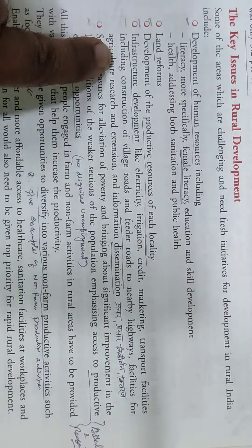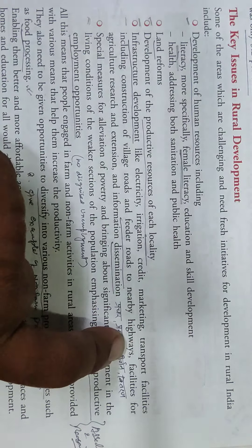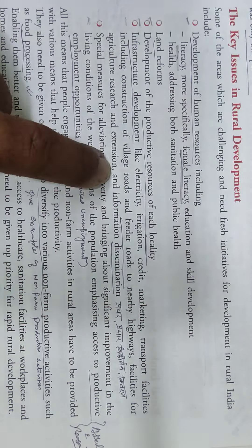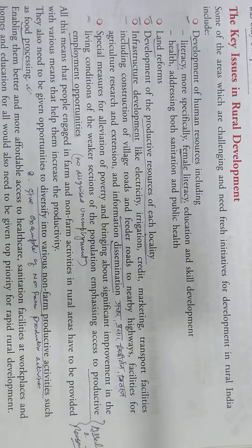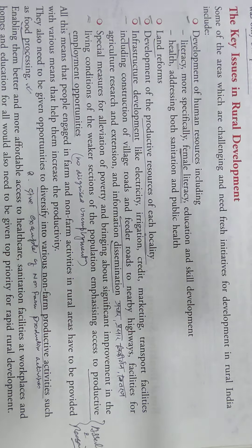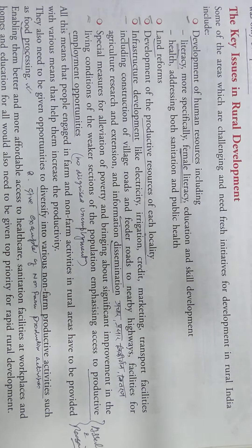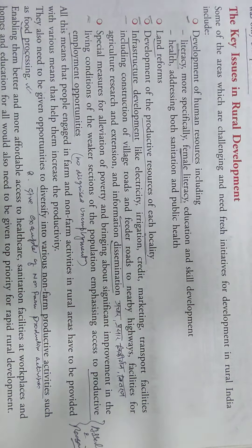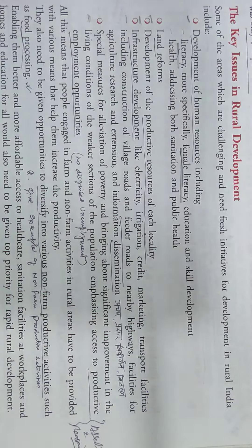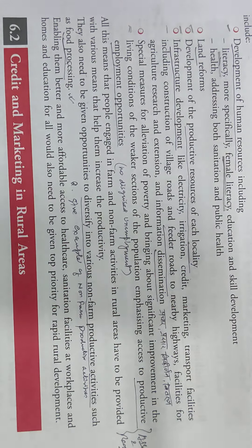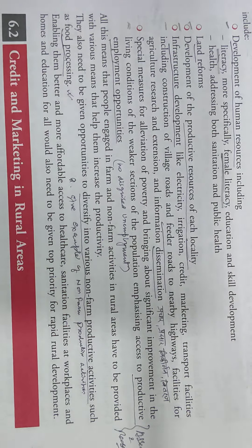Infrastructure development includes electricity, irrigation, credit, marketing, and transport — construction of village roads and feeder roads to nearby highways, facilities for agricultural research and extension, and information dissemination. In India, if we talk about the father of the road revolution, it can be said to be Atal Bihari Vajpayee who started it. The person who then took that revolution further and created a massive infrastructure buildup in a very short time is Nitin Gadkari — he will be remembered as the road man or infrastructure man of India.